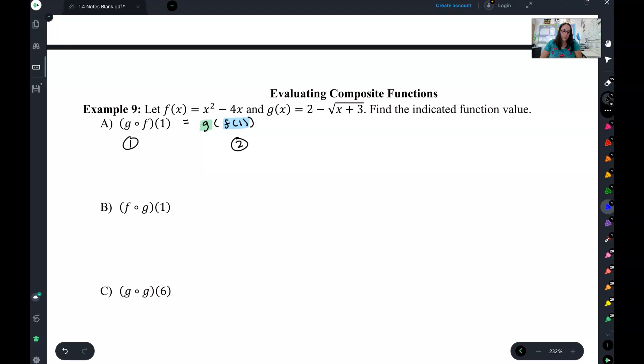The first step is to solve the inside, f of 1. We know how to do that. We do f with our big fat parentheses and plug a 1 in for the x. If I simplify this, I get 1 squared minus 4 is negative 3.